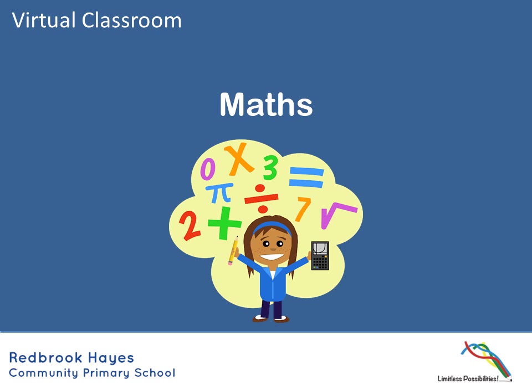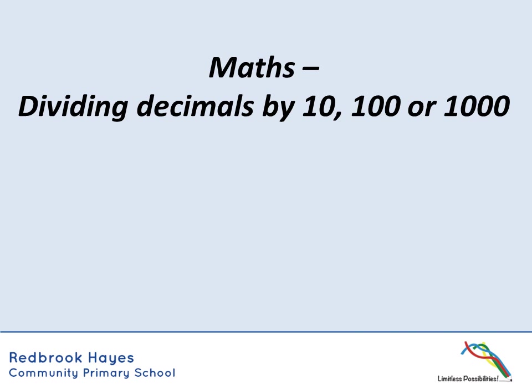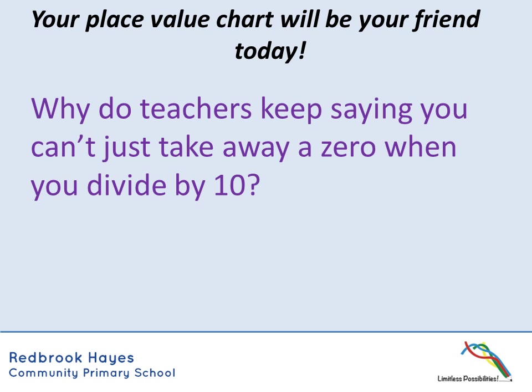Moving on to maths, we're going to continue with decimals, but today we're looking at dividing decimals by 10, 100, and 1000. We'll be using our place value chart again. Why do teachers keep saying you can't just take away a zero when you divide by 10? Because now that we're looking at decimals, that causes a problem — which is why it's really important we learn to use the place value chart.